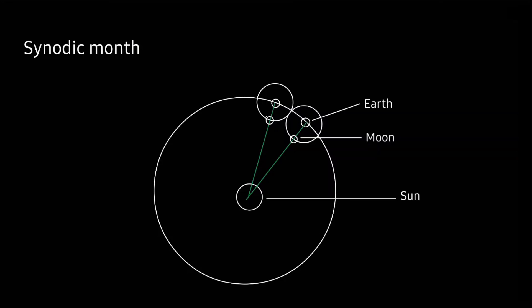Looking at the position of the Sun, the Earth, and the Moon from above the ecliptic plane, the synodic month is completed every time the Moon goes back exactly in between the Sun and the Earth. If the Moon is not located exactly in between the Sun and the Earth, it cannot block the sunlight and we will not see a solar eclipse. The synodic month is the duration between two consecutive new Moons and equals 29.530589 days, which is approximately 29 days, 12 hours, 44 minutes, and 3 seconds.